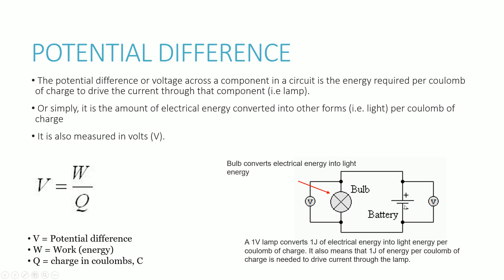So whilst EMF and potential difference are very similar, they are sort of the opposite. EMF is to do with the supply — how much energy is being supplied to charge — and the potential difference is how much energy is being converted from electrical energy to other sources like light energy. It's important to understand the difference.